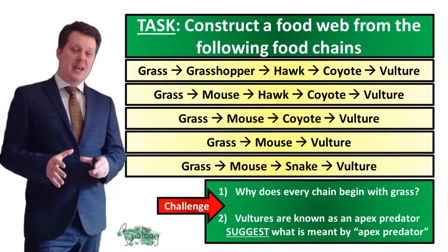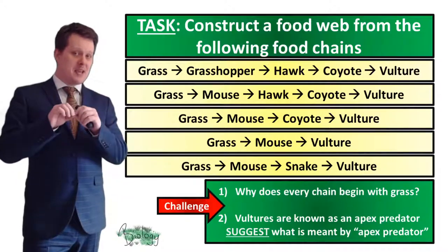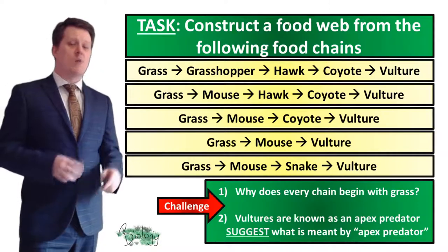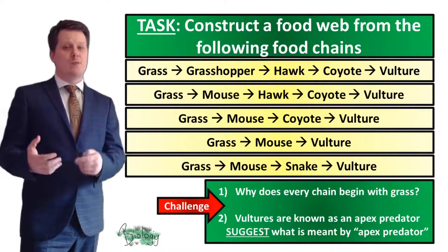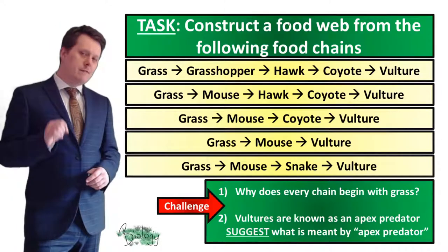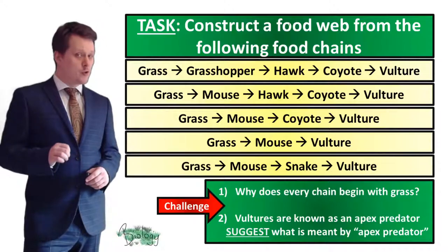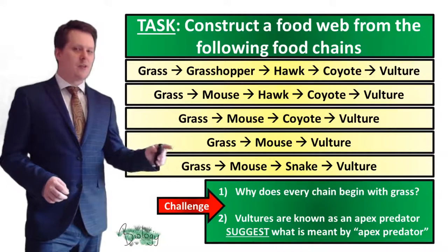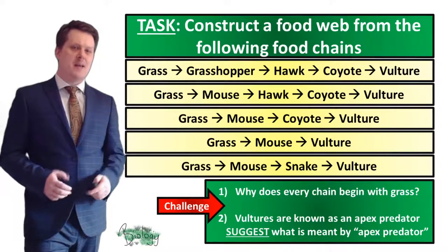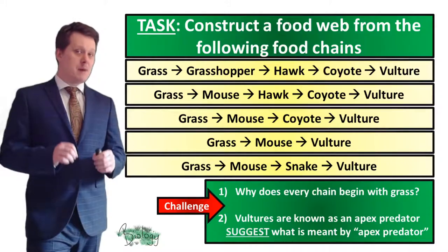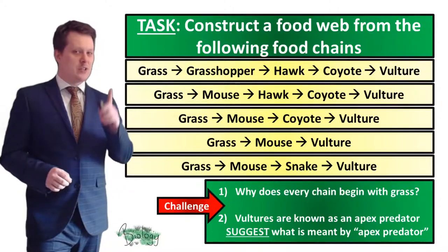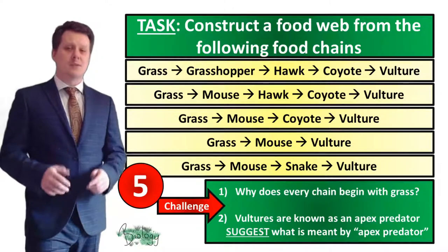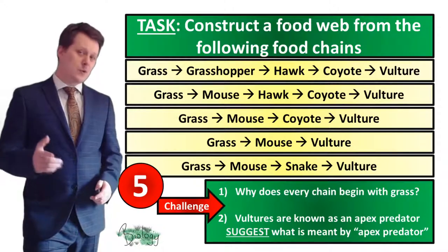Now we're going to do the reverse — construct a food web from five food chains. Remember: the food web always starts with a producer and ends with an apex predator. For a challenge, explain why every chain begins with grass and what is meant by the term apex predator, which in this food web is the vulture. Pause the video if you need more time.